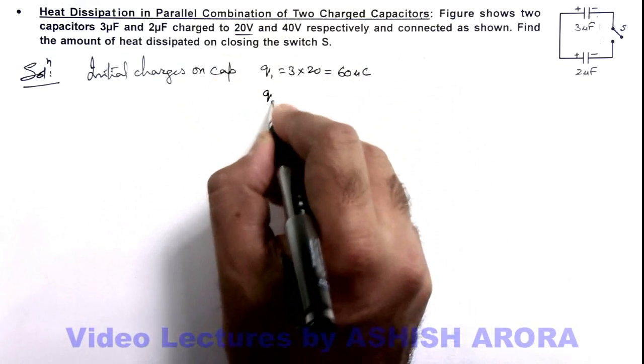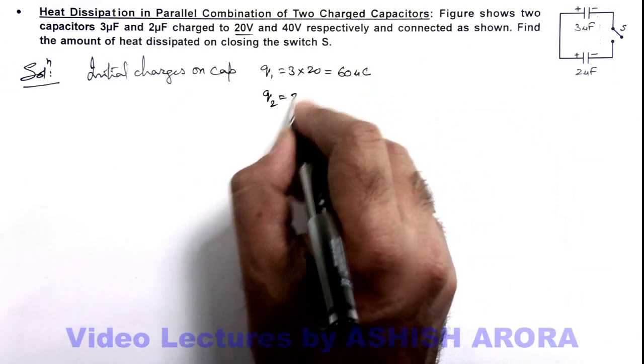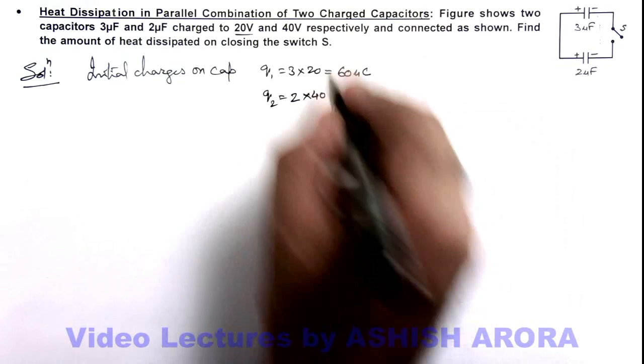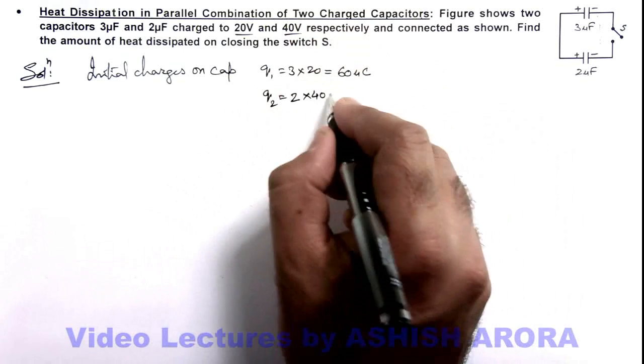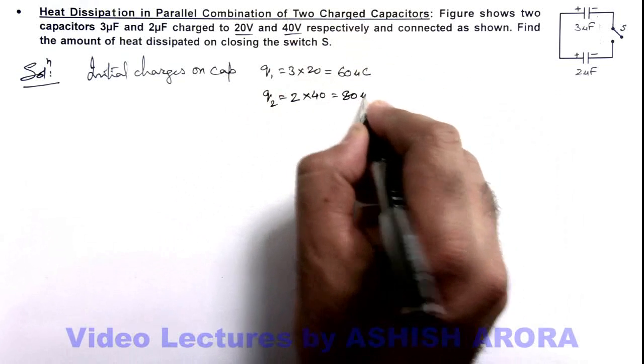The second capacitor, which is 2 microfarad, again the charge is CV, that is 2 × 40, because it is charged to 40 volts. This is 80 microcoulombs.